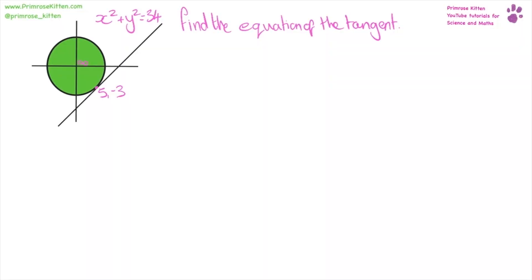Here, I want you to find the equation of the tangent. This line here. Now, we know a few things. The center of the circle is zero, zero. We know this point here is five, three. And we know the equation of the circle is x squared plus y squared equals 34.